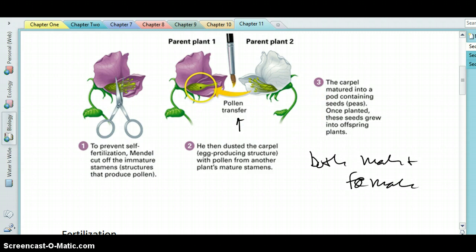So for example, this purple-flowered plant, he removed the male parts of the flower and then transferred the pollen from the white-flowered plant to the purple-flowered plant.